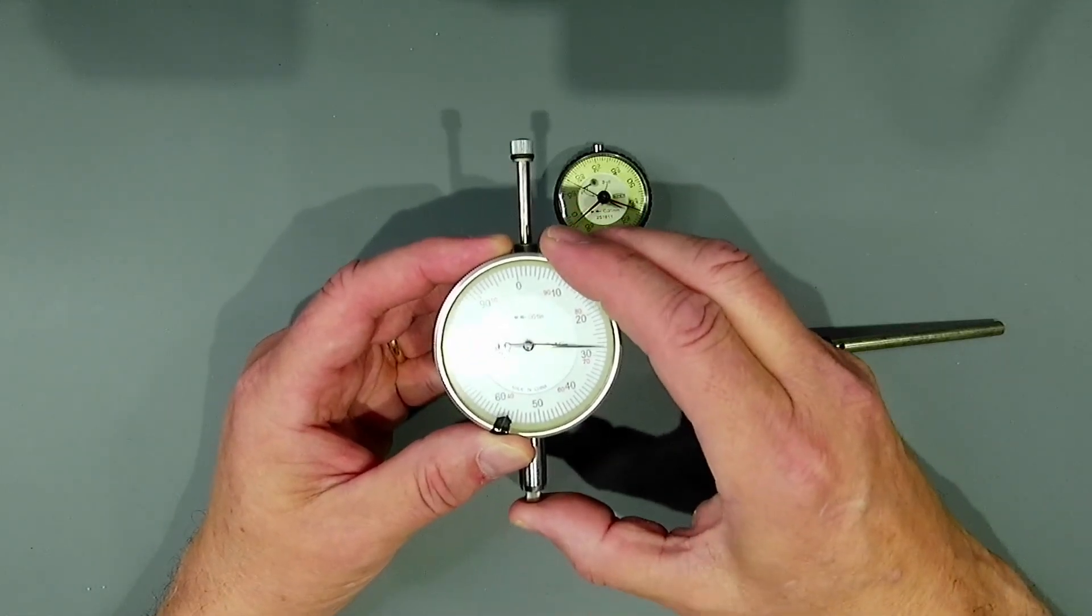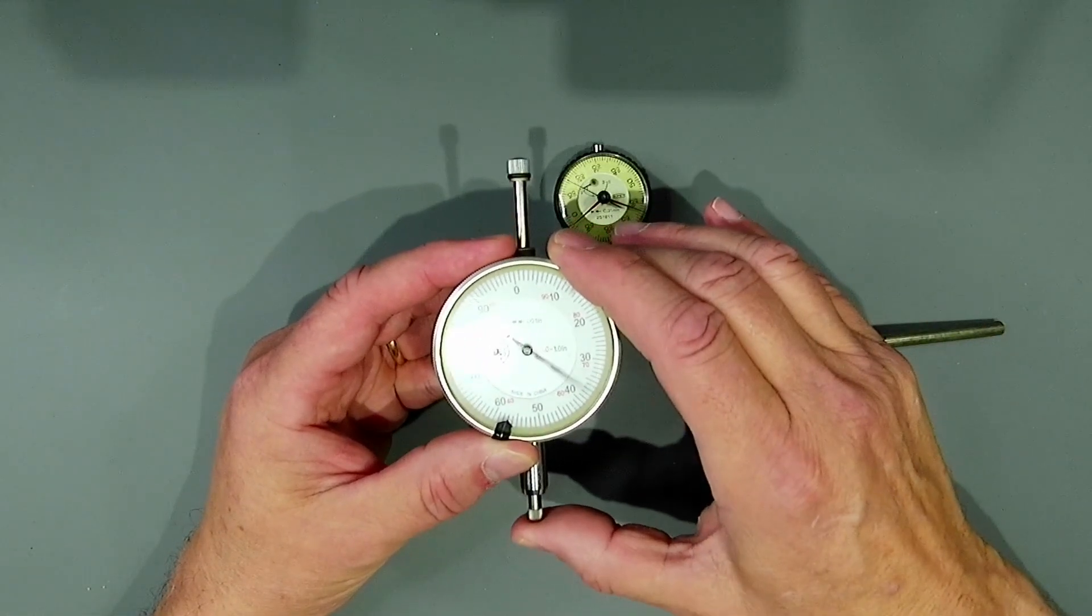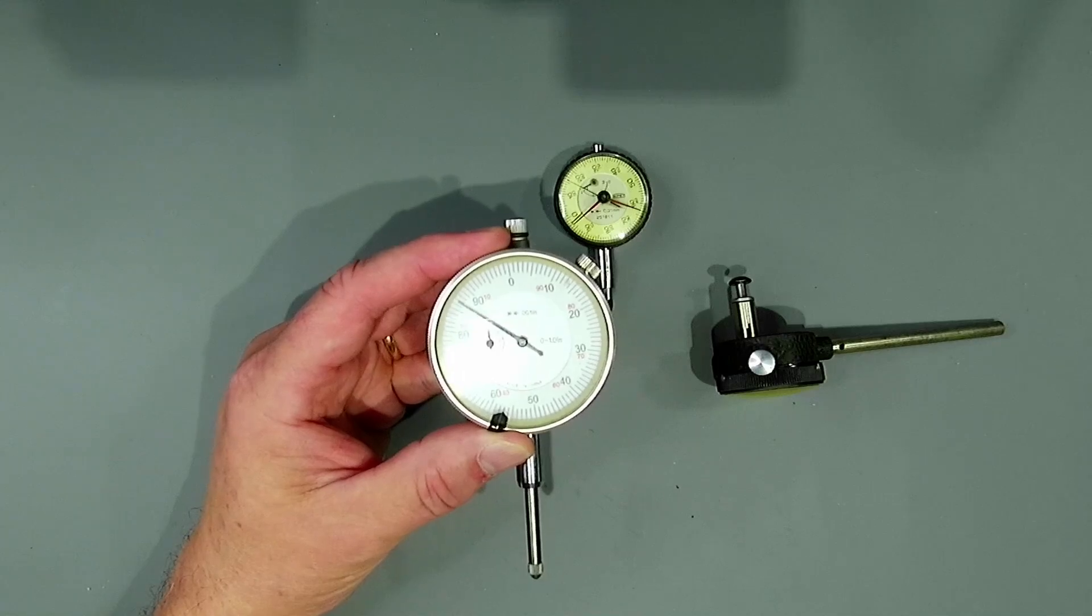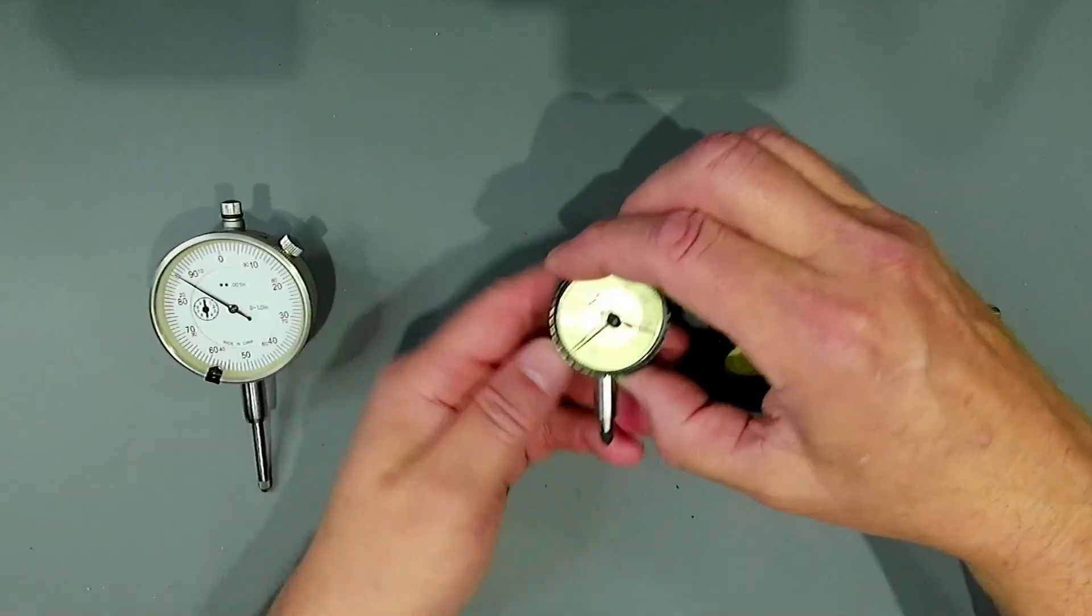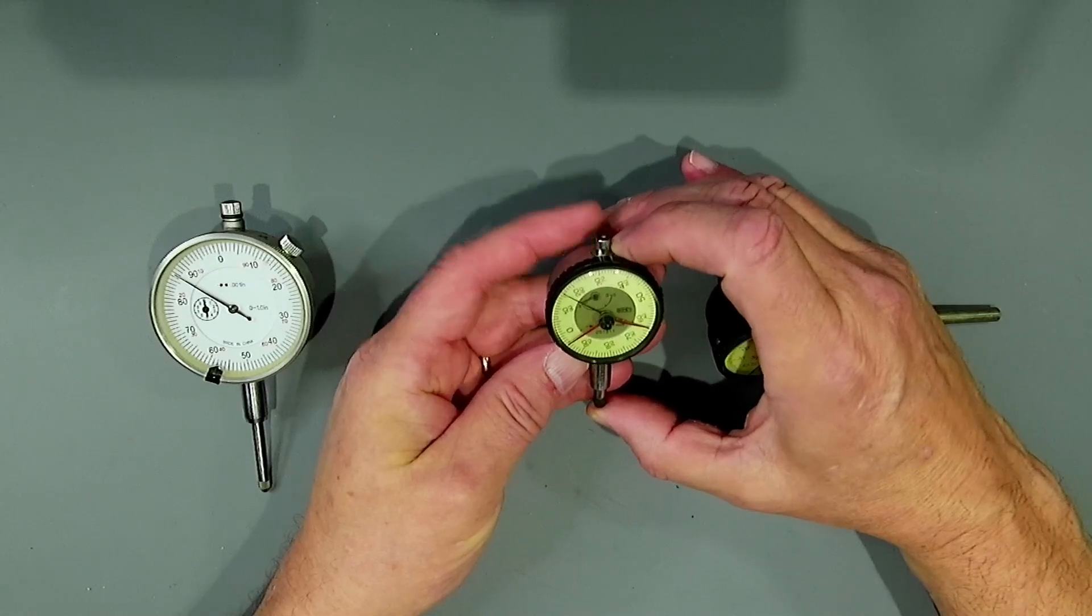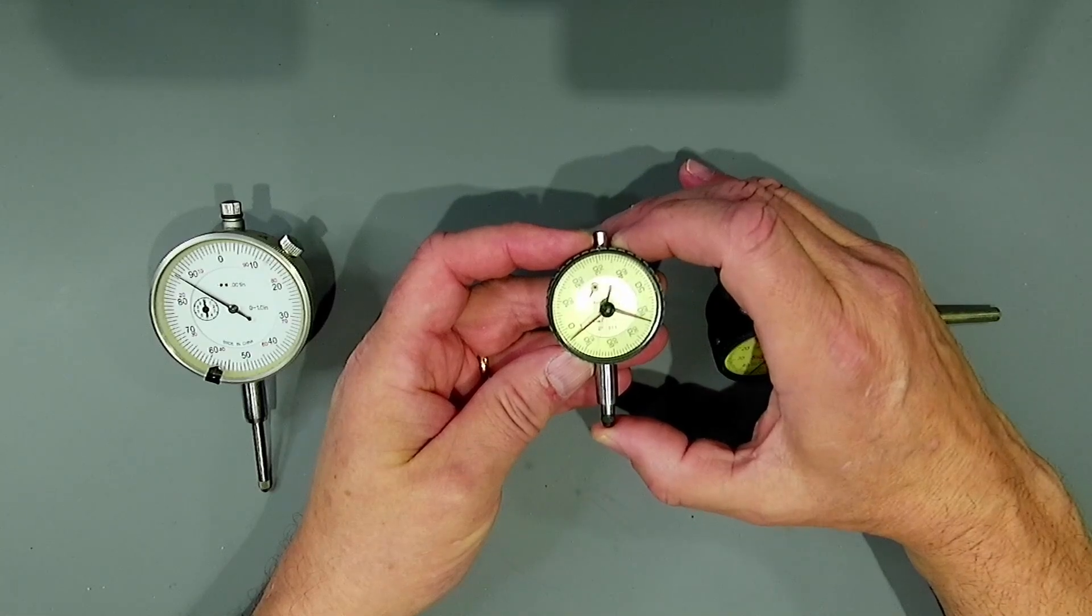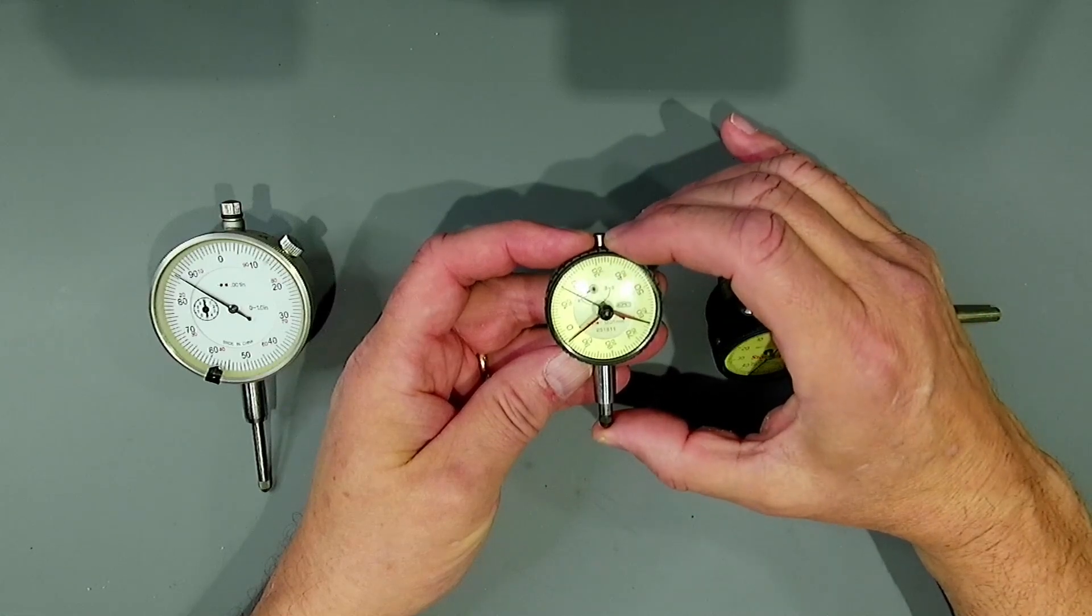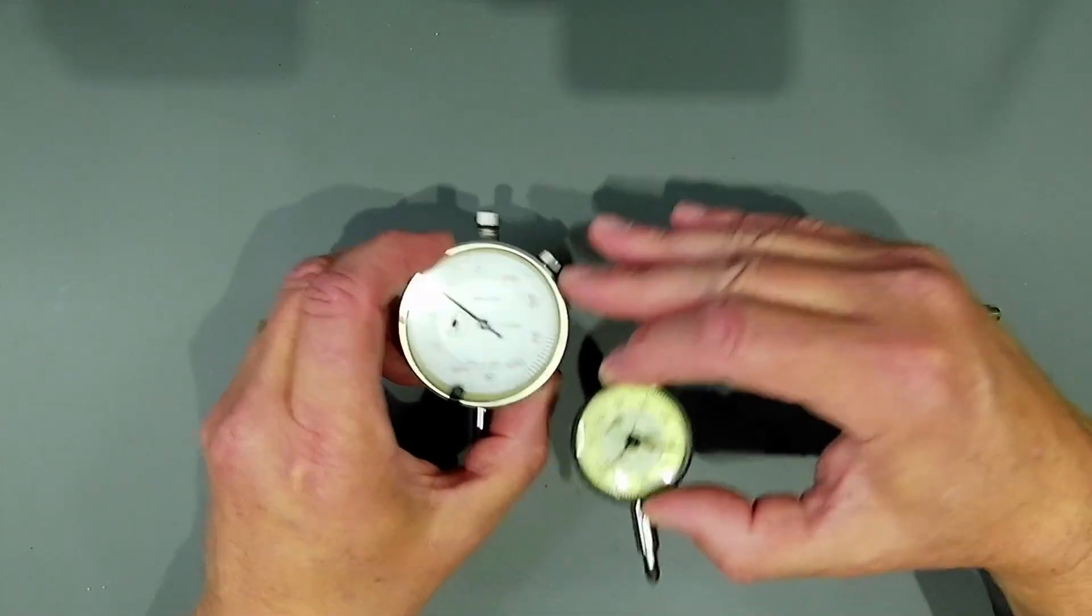This example is an inexpensive dial indicator made in China. It has one inch of travel and the resolution is one thousandths of an inch. These are very common. This particular unit I picked up a number of years back is made in the Czech Republic. It is a metric dial indicator with a total travel of three millimeters and each graduation is 0.01 millimeters. This one's much more accurate than this economical one.